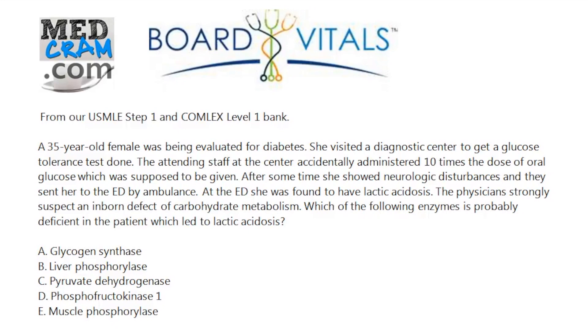So based on these answer choices, what do you think the right answer is? And of course, the answer is pyruvate dehydrogenase. The problem with it being glycogen synthase is because in glycogen synthase, you actually have a problem making glycogen, and you have problems with hypoglycemia, and you have to metabolize in a different way, so you get ketoacidosis.